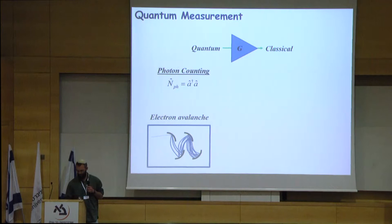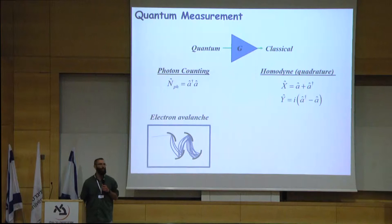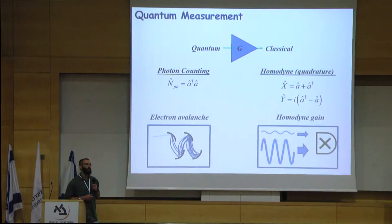Here are the quadratures. And the amplifying mechanism in the homodyne detection is the multiplication of the weak quantum signal with a strong classical local oscillator.